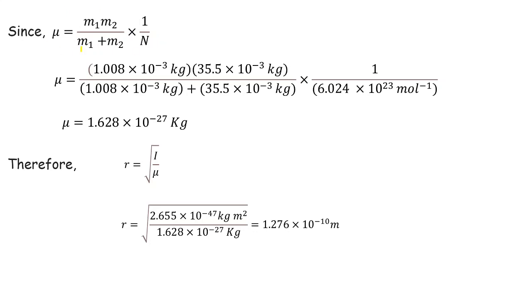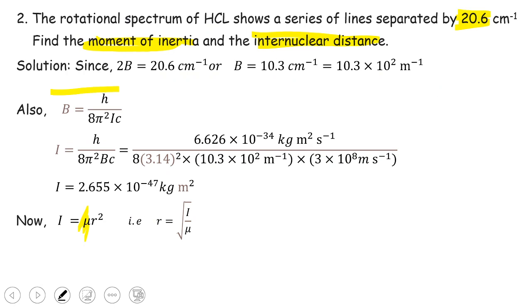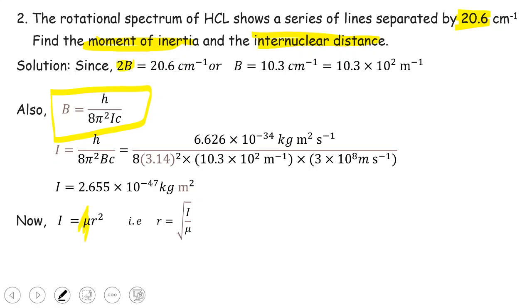First calculate μ, the reduced mass, using the masses of hydrogen and chlorine. Once we know μ, we put in I = 2.655×10⁻⁴⁷ kg·m² to get r = √(2.655×10⁻⁴⁷ / μ) = 1.276×10⁻¹⁰ m. An important note: B = h/(8π²Ic) is a key equation to remember. Also remember that 'lines separated by' means 2B, not B — don't confuse the two.